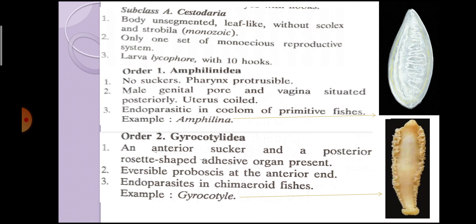The next order of Subclass Cestodaria is Order Gyrocotylida. In this, there is an anterior sucker and a posterior rosette-shaped adhesive organ. An eversible proboscis is present at the anterior end. They are endoparasites in chimaeriod fishes. The example is Gyrocotyle, whose diagram can also be seen.